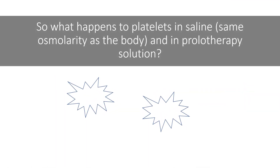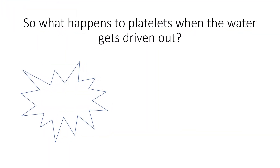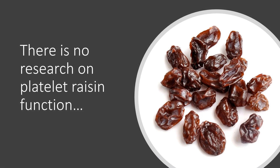So what happens to platelets in saline — same osmolarity as the body — and in prolotherapy solution? In saline, the little dots represent the concentration of the solution, which is about the same as the concentration inside the platelets, so water doesn't really flow one direction or the other. However, in a hyperosmolar or prolotherapy solution, the concentration is a lot more than inside the platelets, so water flows out of the platelets into the solution. They basically shrink and turn into little platelet raisins. Since we have no research on platelet raisin function, this is not a good thing to do to platelets.